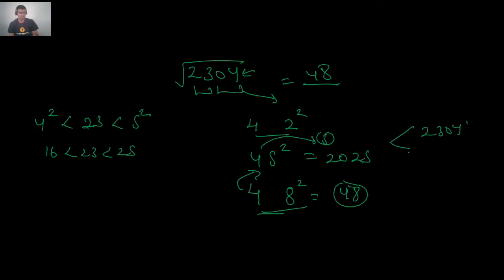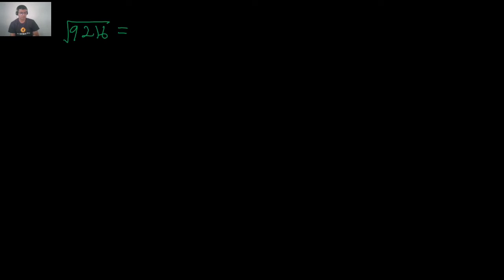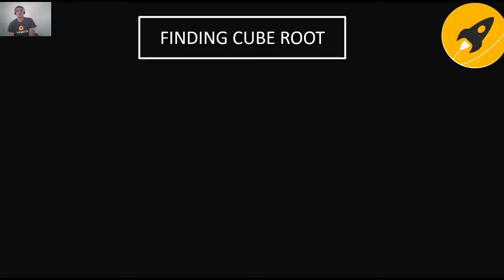You can practice with these numbers: find the square root of 9216 and 3481 using the same method. For 3481: split into 16 and 34. From 16, the unit digit is 4 or 6. Then find which consecutive cubes 34 lies between, and determine the tens digit. Practice by computing squares of two-digit numbers and then working backwards to find their square roots.